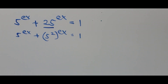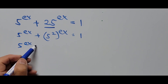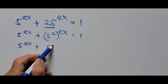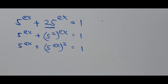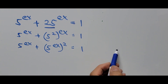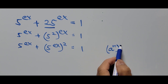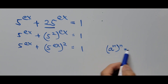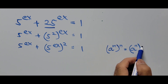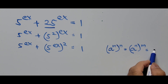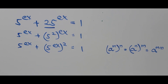This equation can be rewritten as 5 to the power of ex, plus 5 to the power of ex, all squared, equals 1. This is based on the exponent rule: a raised to m, then raised to n, equals a to the power of m times n.